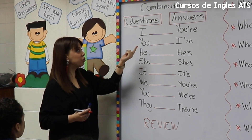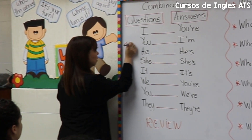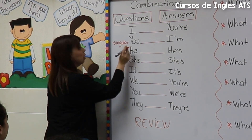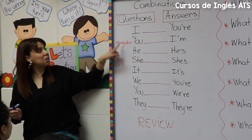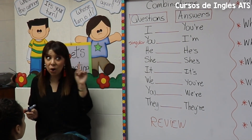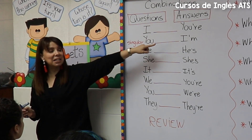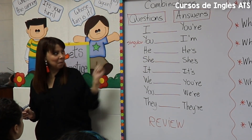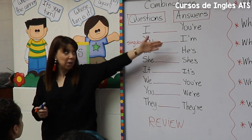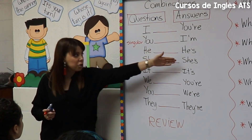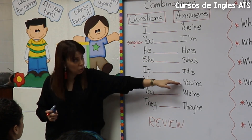Now, if the question is with you, but you in singular, the answer is with I'm. Si la pregunta nos la hacen con you, pero you en singular, la respuesta tiene que ser con I'm. If the question is with he, the answer is with his. She — she's. It — it's. We — your.